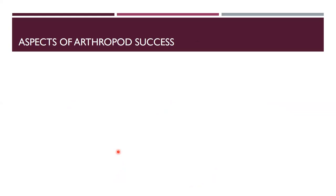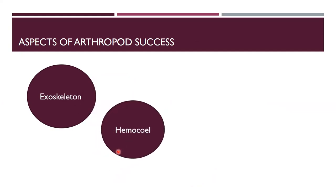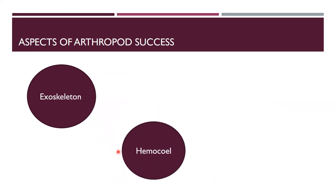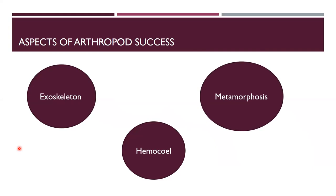Now, the aspects of arthropod success. The first one is due to their exoskeleton, which protects from environmental conditions. Then the hemocoel, so that they can maintain the flow of circulatory fluid. After that, metamorphosis — the larva is converted into an adult.